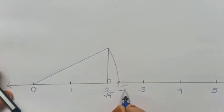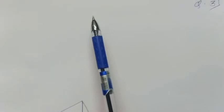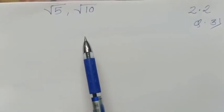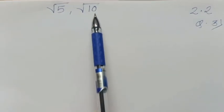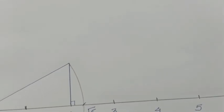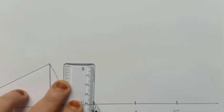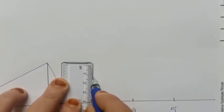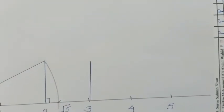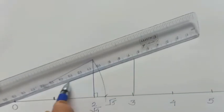Likewise, we will draw the next number, which is root 10. Which perfect square is nearest to 10, or which is the previous root for 10? It is root 9, and root 9 equals 3. So to draw root 10, we draw one perpendicular on 3. Here, 3 is nothing but root 9.